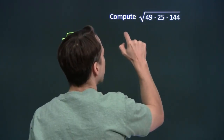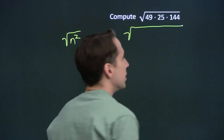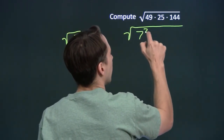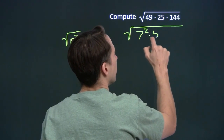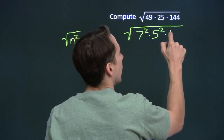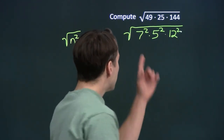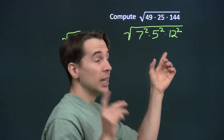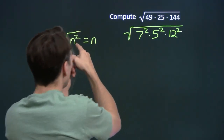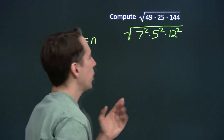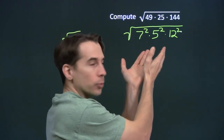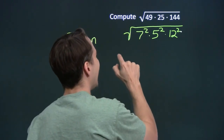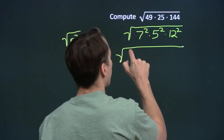We're going to look at 49, 25, and 144 as the squares of 7, 5, and 12. So we write each of those — 49, 25, and 144 — as squares. Now we'd like to have just the square of one thing under the square root, so we're going to use an exponent rule here. We've got a product of squares, and we can write that as the square of a product.